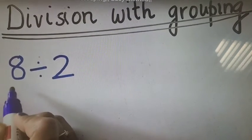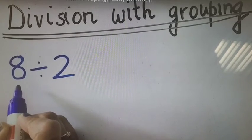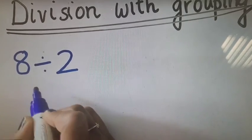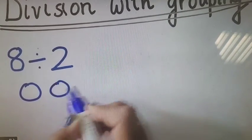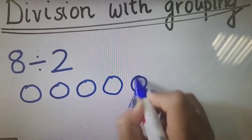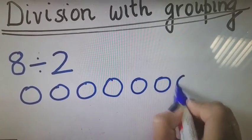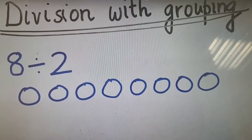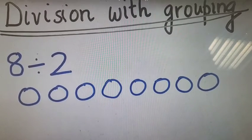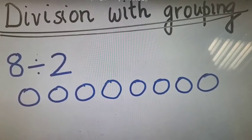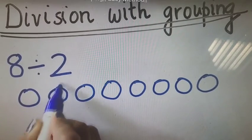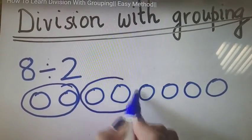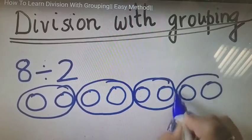Another example is coming up here, and this one now is division with grouping. 8 divided by 2. Here again, we're going to make some circles—you can use stars, whatever you want to use. So we're going to make 8 of them, and of course we're dividing by 2, so we are going to group them equally, groups of 2.